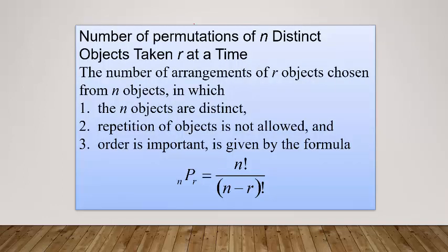So this is the formula. The number of permutations of n distinct objects taken r at a time — the number of arrangements of r objects chosen from n distinct objects, where repetition is not allowed and order is important — is nPr, which equals n factorial divided by (n minus r) factorial.